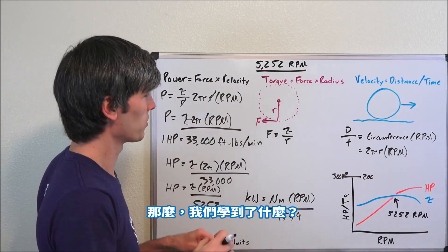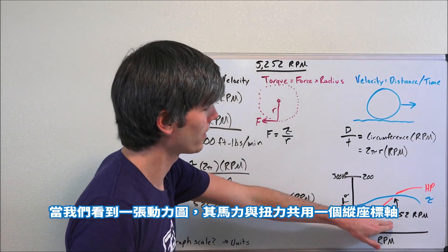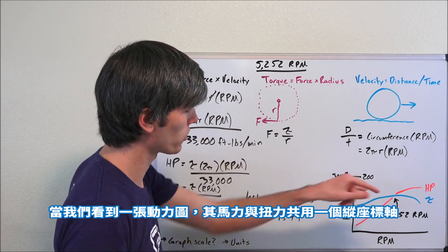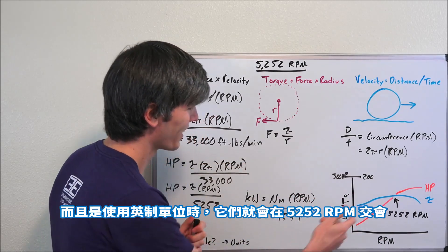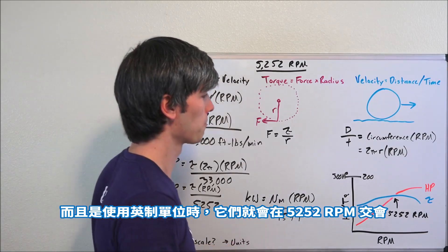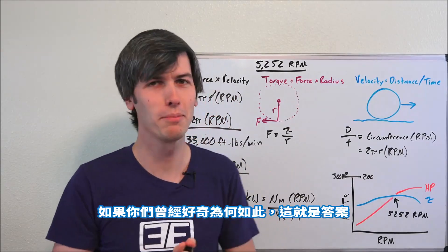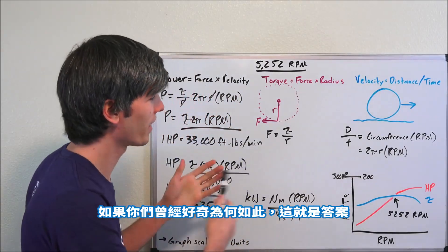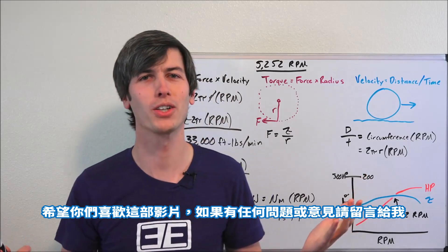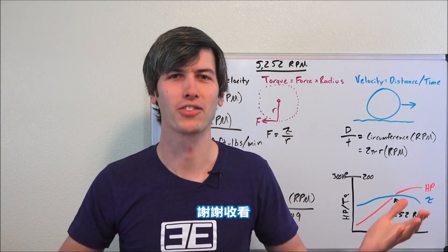So what have we learned? Well, we know where the number comes from. We know why, when you look at a dyno plot with horsepower and torque equally scaled, that they will cross at 5,252 RPM using imperial units. So it's meaningless, but this is where it comes from, and if you've ever been curious why, that is the answer. So hopefully you've enjoyed watching. If you guys have any questions or comments, feel free to leave them below. Thanks for watching.